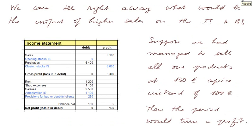Since accounting is a dashboard of the firm, we can see the impact of higher sales on the IS and balance sheet. Suppose we had managed to sell all our products at 130 euros a piece instead of 100 euros. Our sales were 7,000; if we sold everything at 130, sales would be 9,100. With the same goods and other expenditures, instead of a loss we would return a profit of 130 euros — the value of one unit.